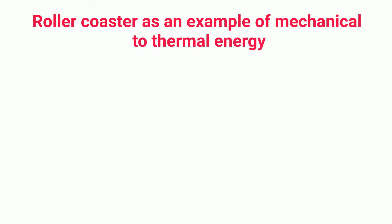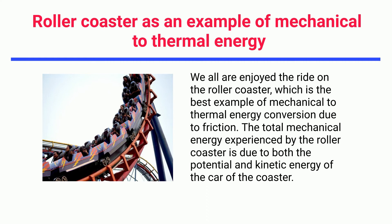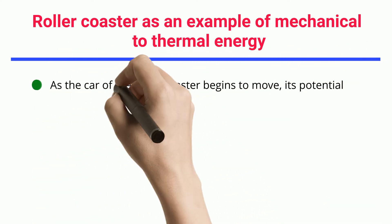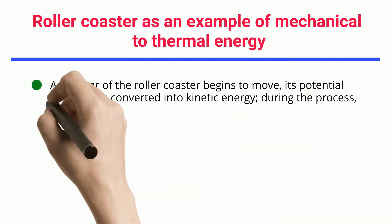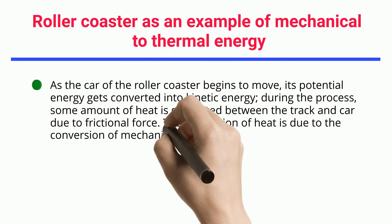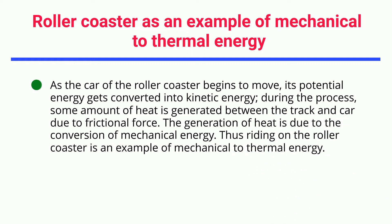Rollercoaster as an example of mechanical to thermal energy. Riding on a rollercoaster is the best example of mechanical to thermal energy conversion due to friction. The total mechanical energy experienced by the rollercoaster is due to both the potential and kinetic energy of the car of the coaster. As the car begins to move, its potential energy gets converted into kinetic energy. During the process, some heat is generated between the track and car due to frictional force, which is the conversion of mechanical energy into thermal energy.